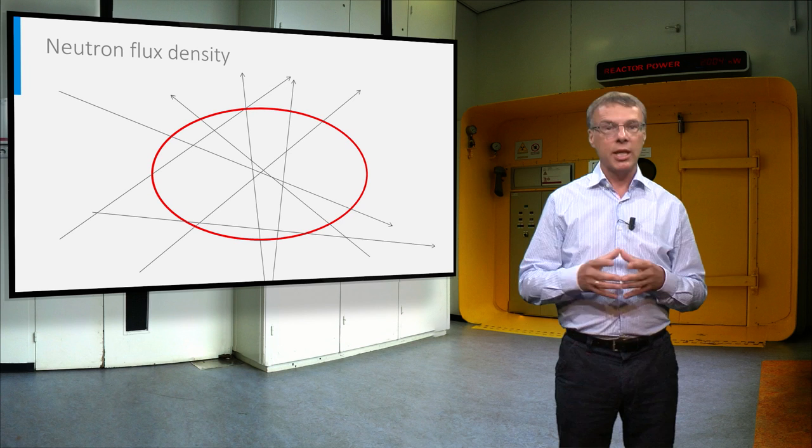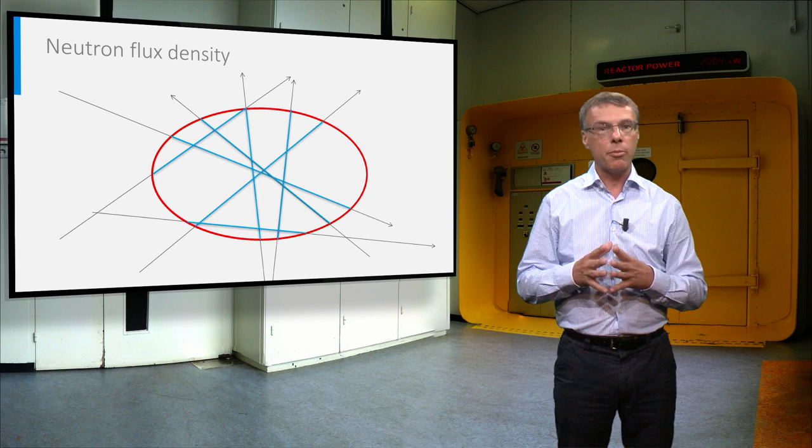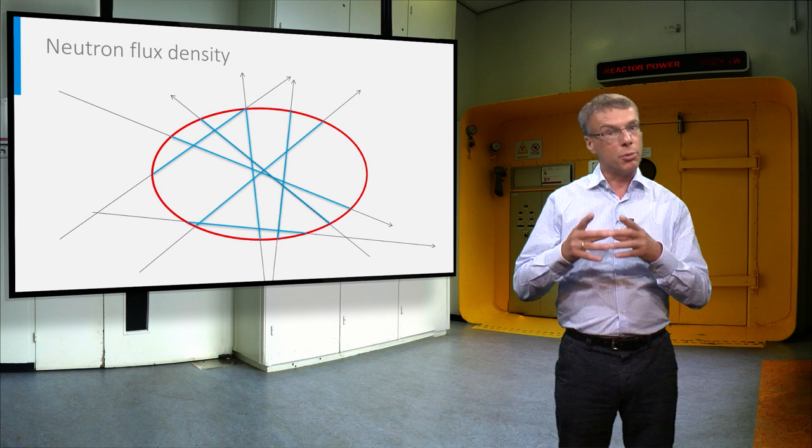The definition of the neutron flux density is illustrated in this figure. Suppose we have an arbitrary volume traversed by neutrons. If we sum the segments of all neutrons through the volume per second and divide by the size of the volume we get the neutron flux density. It is the total distance traveled by all neutrons per unit volume and per unit time.